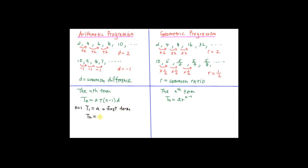t2 = a + (2−1)d, which gives t2 = a + d. t3 = a + (3−1)d = a + 2d. Using the same concept, t4 = a + 3d. And if you have t100, this is equal to a + 99d. You should be able to apply the formula very fast.